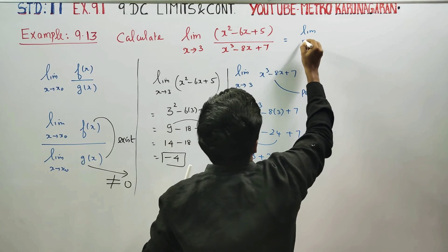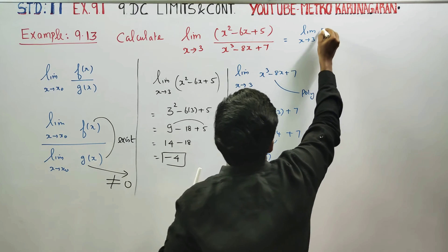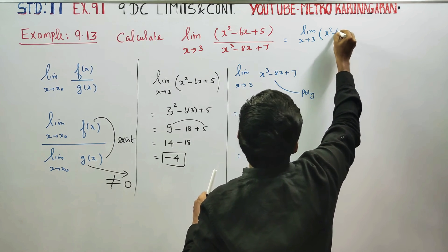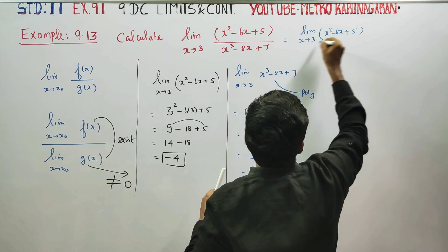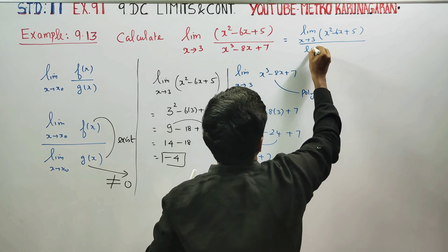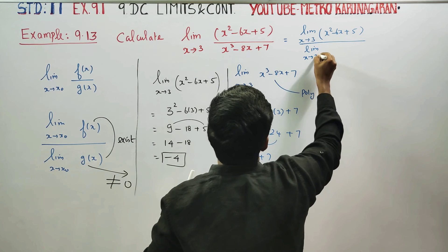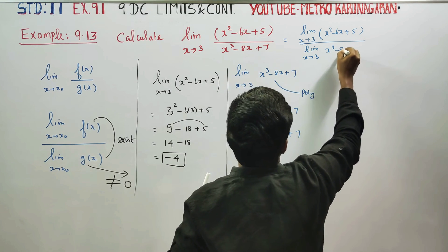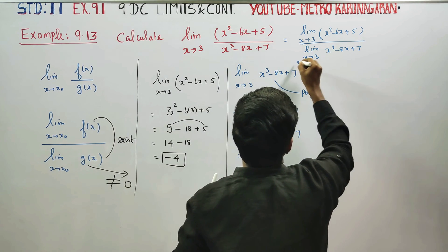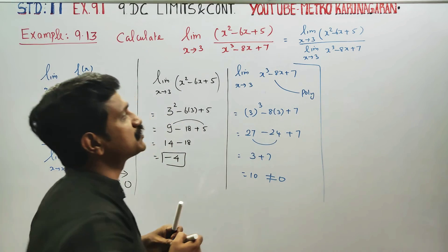Limit as x turns to 3: numerator separately is x² - 6x + 5 divided by denominator separately, limit as x turns to 3 of x³ - 8x + 7. These two limits exist.